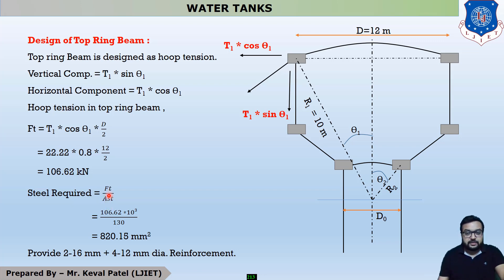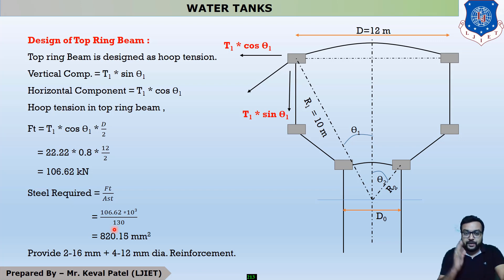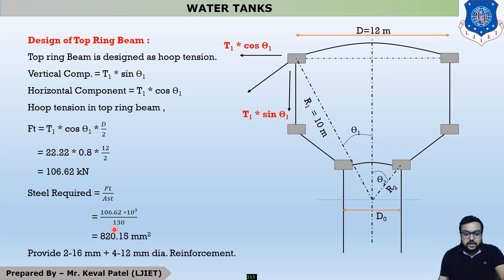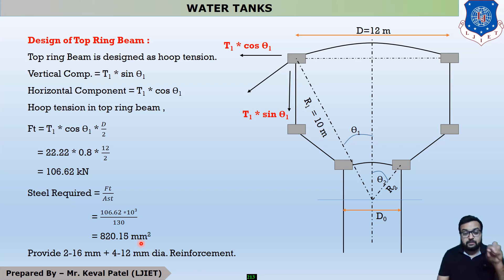The value of ft = 106.62 × 10³ N, divided by sigma_ht (permissible tensile stress of steel). For Fe415, from Table 4, the permissible tensile stress is 130 N/mm². So steel area required = 106.62 × 10³ / 130 = 820.15 mm². This is the minimum steel required.